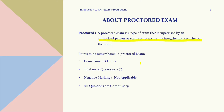Let's take a closer look at the details of the proctored NPTEL exam. The exam duration is three hours, so manage your time effectively to answer all questions. The exam consists of a total of 55 questions covering various aspects of the Introduction to Internet of Things course. Unlike some exams, there is no negative marking — you won't lose marks for incorrect answers. All questions are compulsory, so read each question carefully and provide an answer for every one.